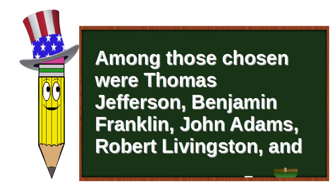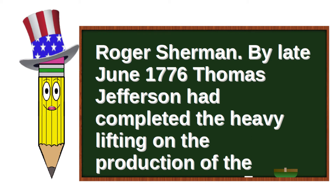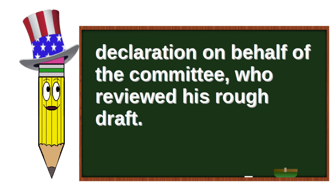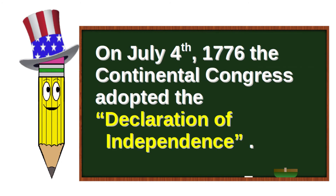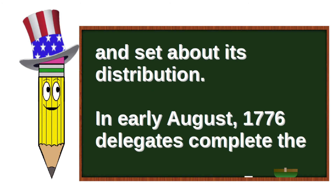Among those chosen were Thomas Jefferson, Benjamin Franklin, John Adams, Robert Livingston, and Roger Sherman. By late June 1776, Thomas Jefferson had completed the heavy lifting on the production of the declaration on behalf of the committee, who reviewed his rough draft. On July 4th, 1776, the Continental Congress adopted the Declaration of Independence and set about its distribution.